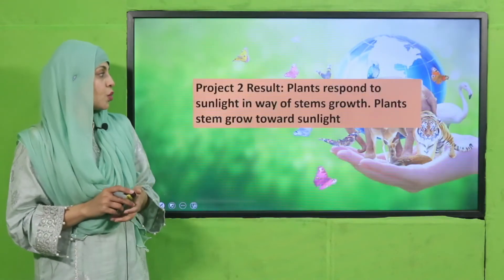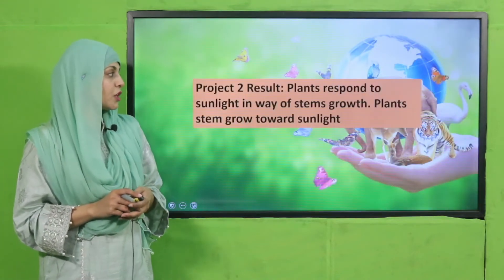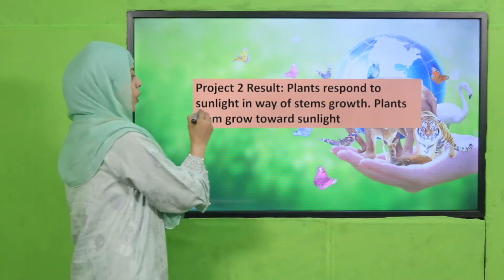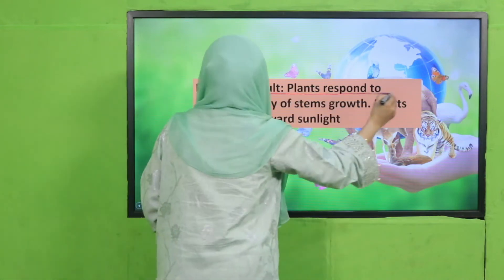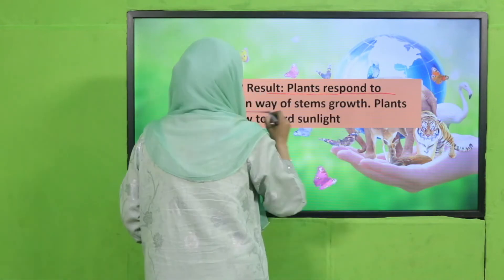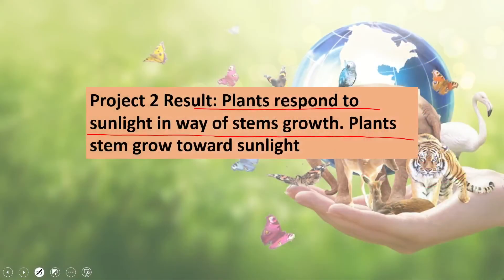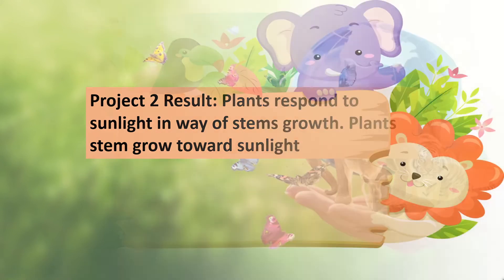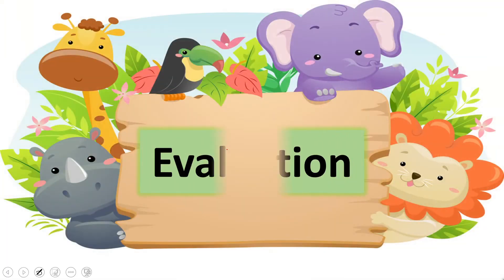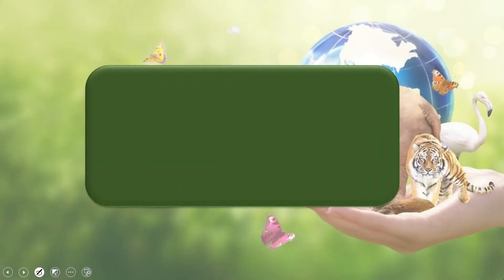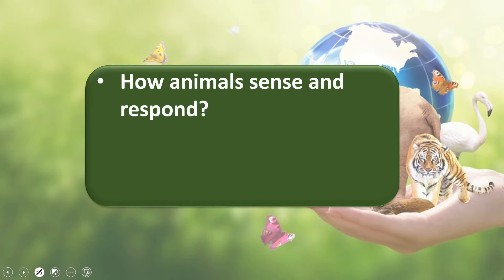Project results: plants respond to sunlight — plant stems grow towards the sunlight. Now it is time for evaluation. Listen carefully and answer orally: How do animals sense and respond?